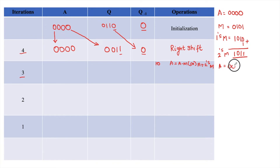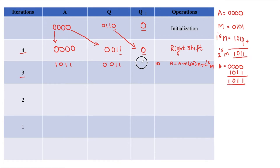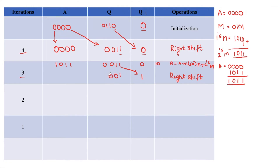A is now 1011, Q remains 00011 as written, and Q-1 remains 0. After performing A = A minus M, we go for an arithmetic right shift. The last bit of A (1) moves to Q-1. We write the remaining 3 bits of A (101) and copy the first bit (1), giving A = 1101. Q becomes 1001 after shifting. We reduce N by 1, giving N = 2. N is not 0, so we proceed. We check Q0 and Q-1: they are now 1 and 1.